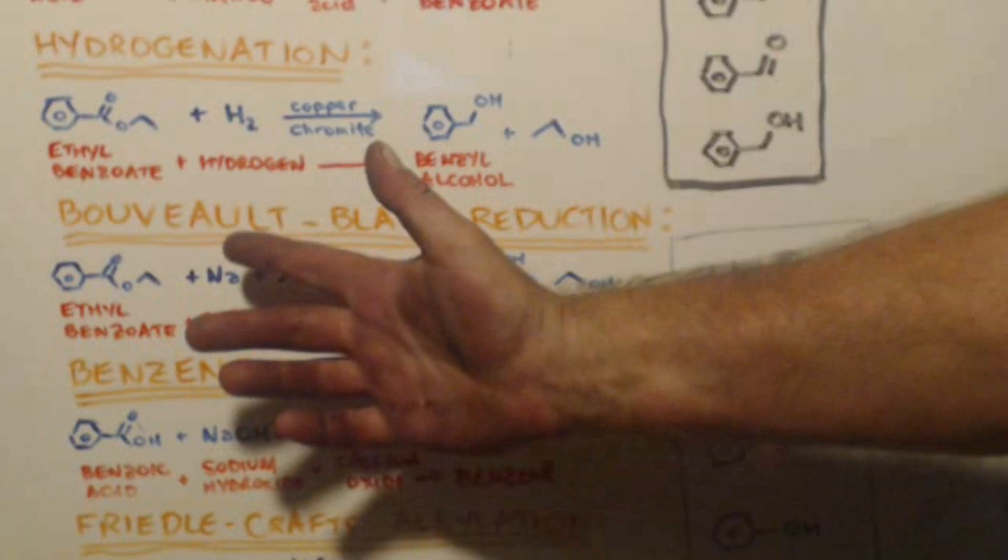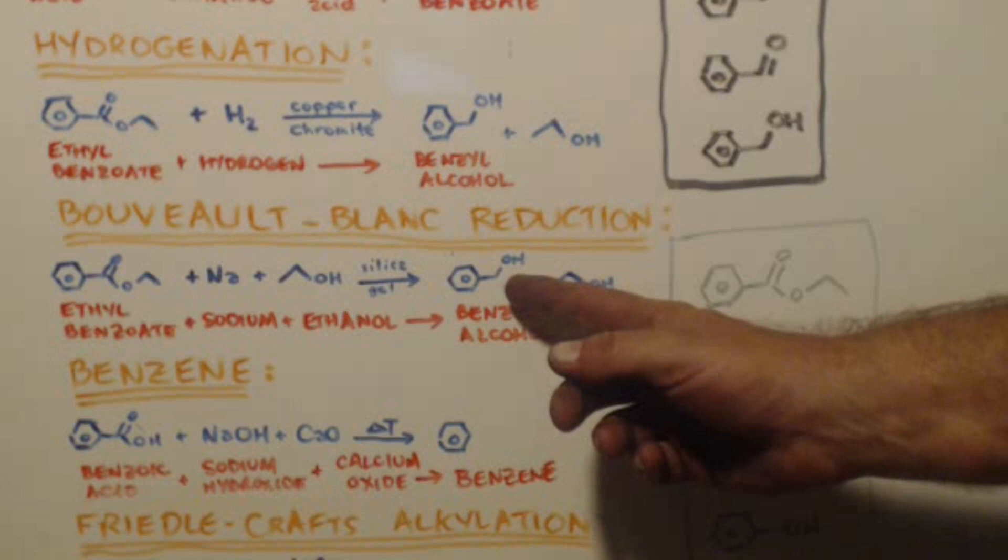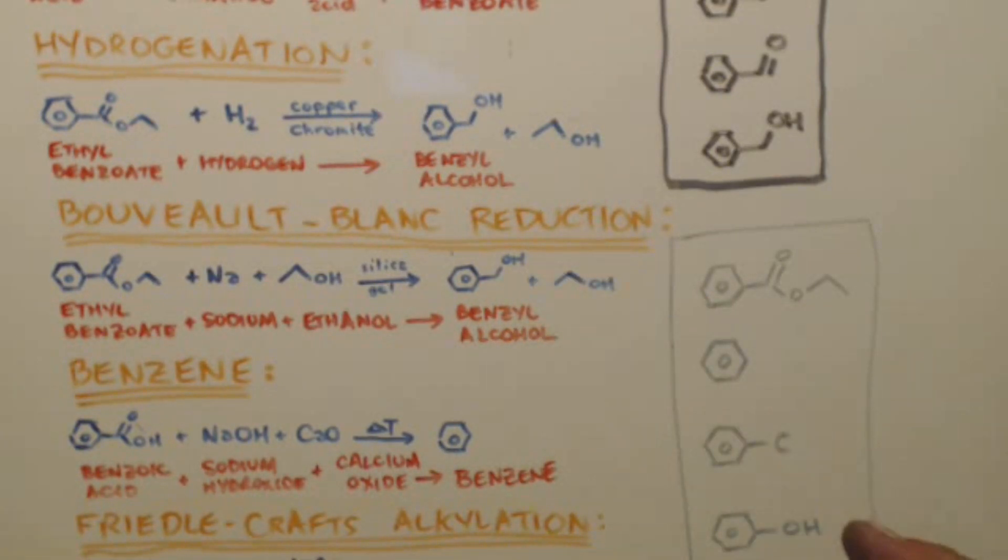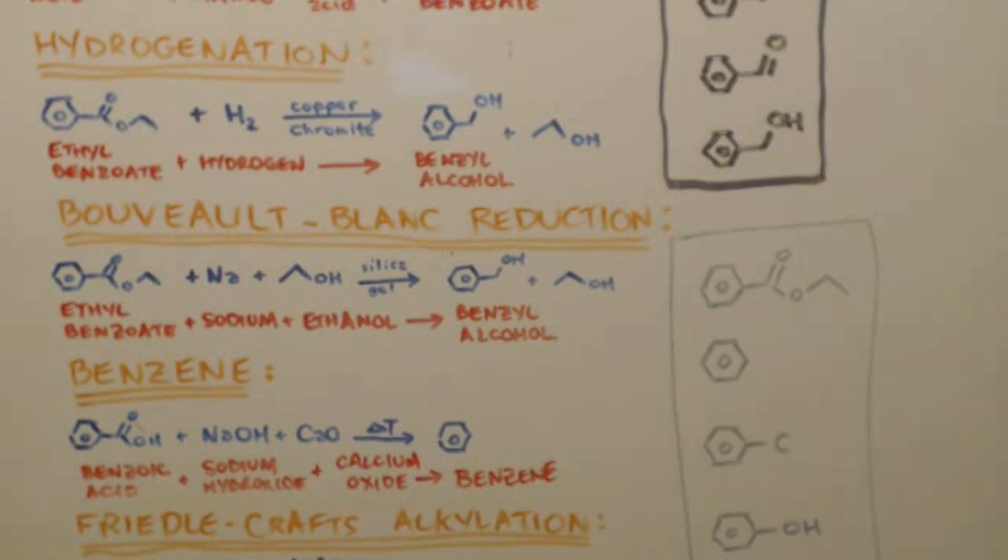Just to give you another example. Bouveault-Blanc reduction. Again, starting with an ester. Ethyl benzoate. Sodium. Ethanol. Mix them together. Dripping your alcohol. And you'll end up with benzyl alcohol and ethanol. So, I just wanted to give you a couple examples. There are, like I said, each video I'll go more in depth about what I know. If I've done it, if I haven't done it.